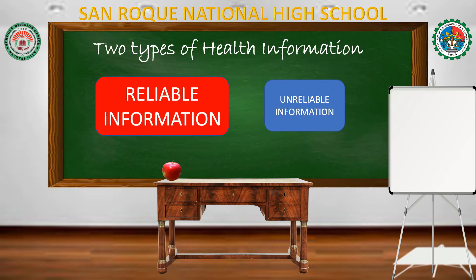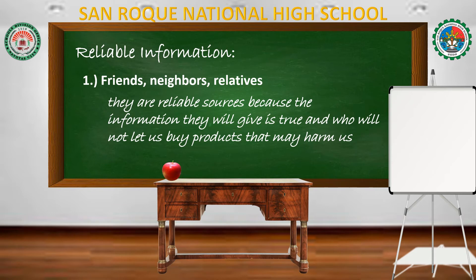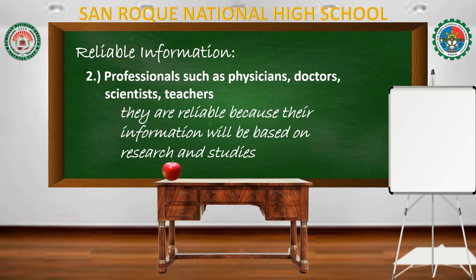Let us proceed to the reliable information. Number one: friends, neighbors, and relatives. They are reliable sources because the information they give is true and they will not let us buy products that may harm us. Number two: professionals such as physicians, doctors, scientists, and teachers. They are reliable because their information is based on research and studies.